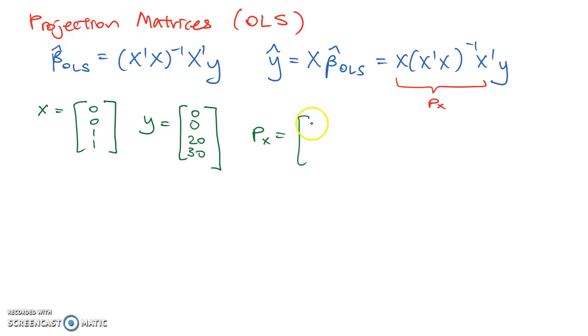In this case, we have 0 0 1 1, and then we need the x prime x inverse, which will be equal to this inverse, and this is further multiplied by 0 0 1 1 x, x prime.